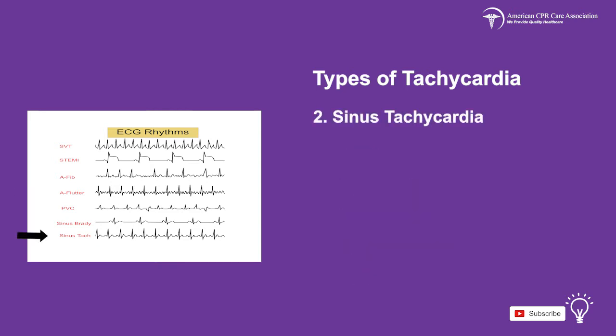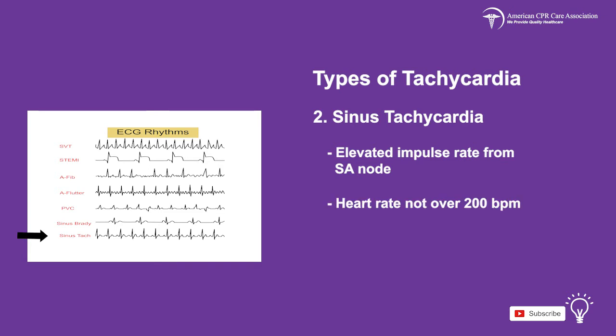The next type is sinus tachycardia, which is when the rate of impulse from the SA node is elevated more than normal for the age of the child. The heart rate usually does not exceed 200 beats per minute, but can exceed 180 beats per minute in infants and 140 beats per minute in children.